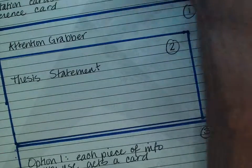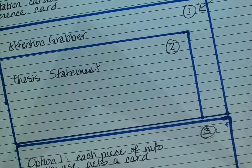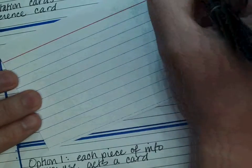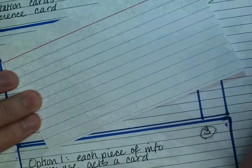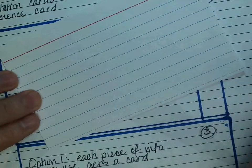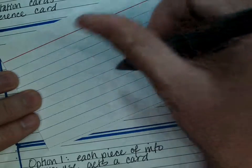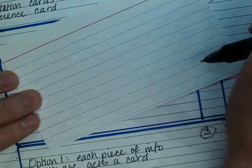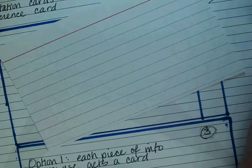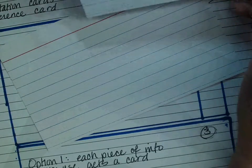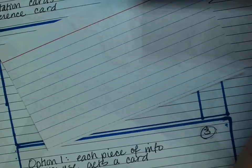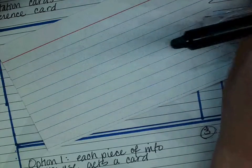From there, in the multiple card method, you have options. Remember, option one is that each piece of information gets its own card. Option two is that you put the entire body of your speech on one card so that you're only using three cards, maybe a fourth for your conclusion. There are advantages to both ways.